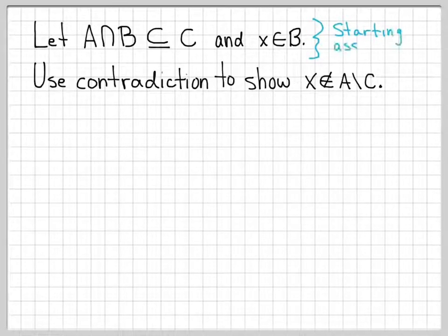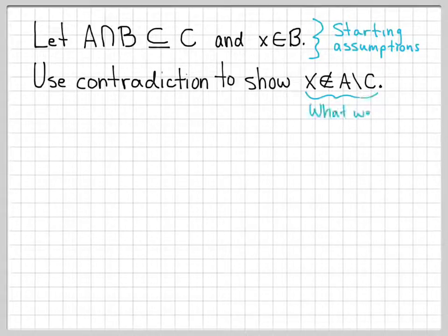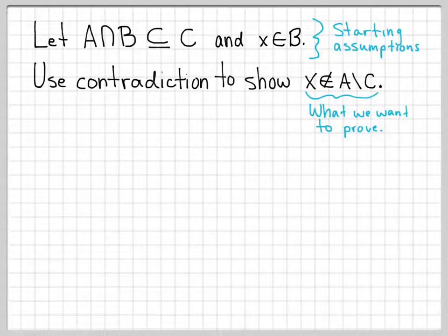So these are our starting assumptions: the fact that A intersect B is a subset of C, and the element X is in B. And what we're trying to prove is that X is not an element of the set A difference C. This is what we want to prove.